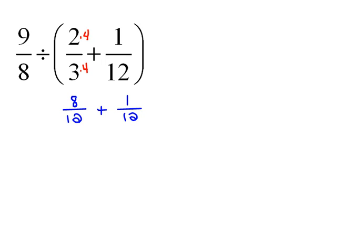So 2 times 4 would be 8. Now we can go ahead and we can add these two together. So 8/12 plus 1/12 would be 9/12.